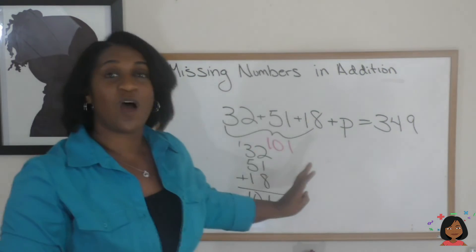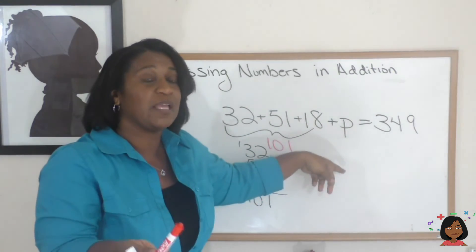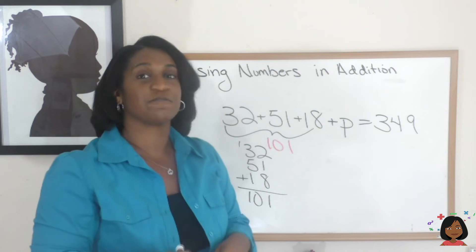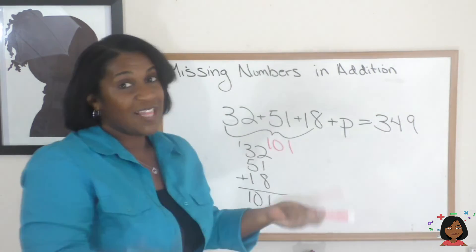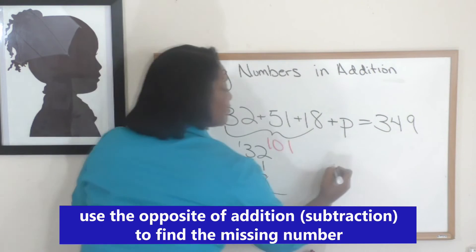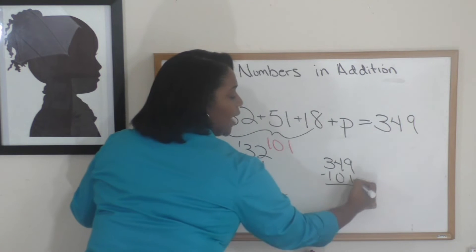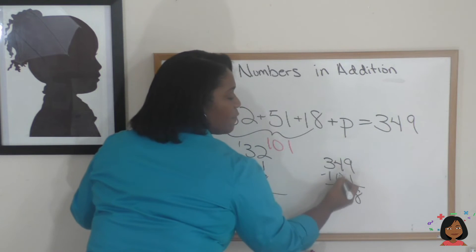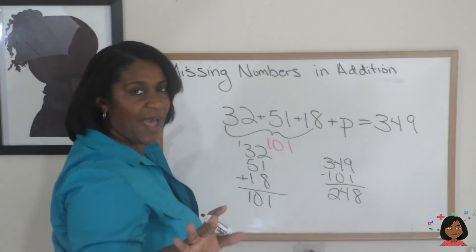I'm going to use a red marker for it. So now we have 101 plus some number, we're calling it P, equals 349. And now it looks very similar to what we just did before. Let's go ahead and subtract. 349 minus 101. 9 minus 1 is 8. 4 minus 0 is 4. 3 minus 1 is 2.